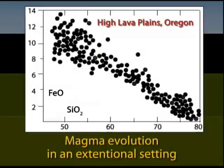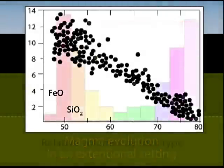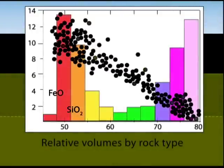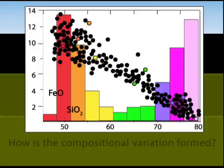Like many other bimodal provinces worldwide, the volcanic rocks of Oregon's high lava plains are mainly basalt and rhyolite, with sparse intermediate compositions shown on this histogram of relative volume. How is this compositional variation formed?